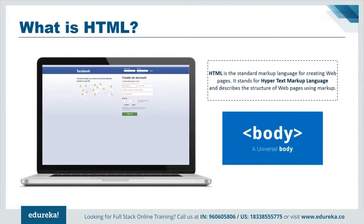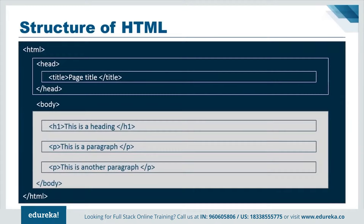An HTML boilerplate begins with the HTML tags, which tell the browser that this is an HTML page. Next comes the head tag, which contains meta information about the document, including links to style sheets, fonts, and JavaScript. The head tag also has the title element, which specifies the document title visible on the browser tab. Then comes the body tag, which contains the visible content — elements like H1 tags and paragraph tags that make up the mass of your content.